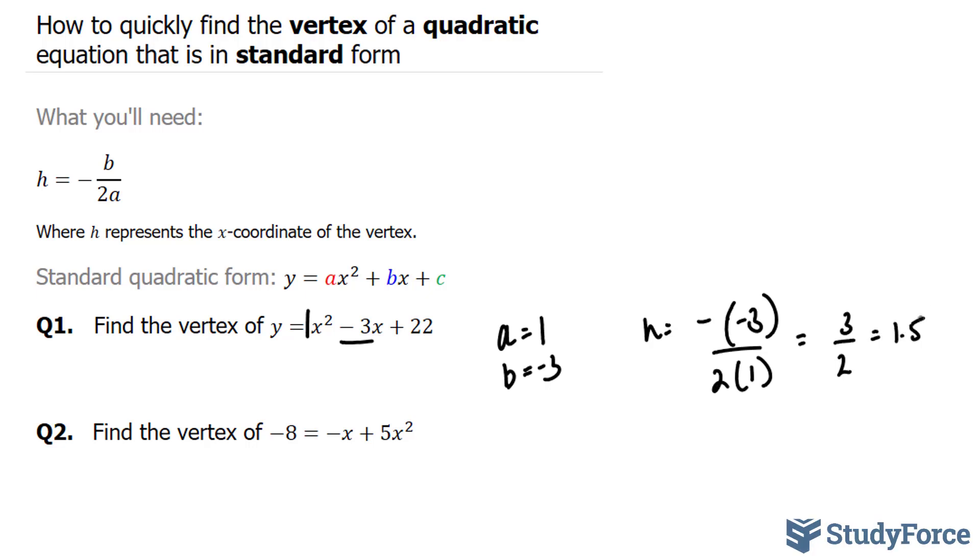So that right there, 1.5, represents the x-coordinate of the vertex. Now remember, vertex is a point. It needs a y-coordinate.